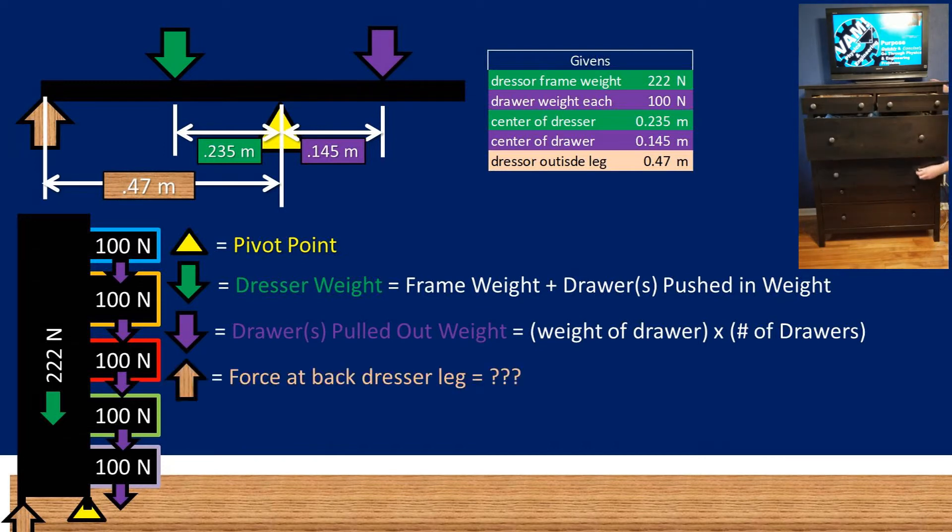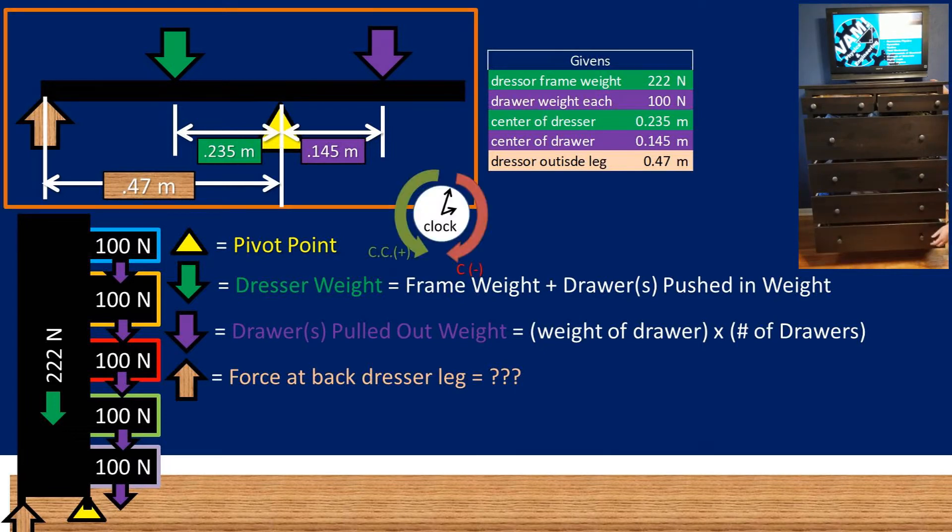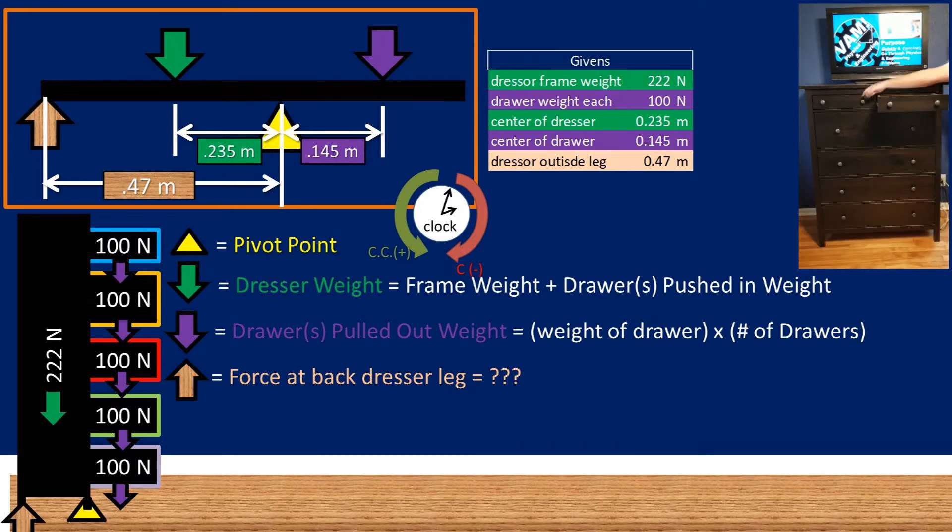Now we need to find the force that is the floor pushing back on the back legs of the dresser. You may have noticed at the top of the screen there is a diagram that is a lever. This represents this problem. So now recall that if a torque is going clockwise, it is negative, and if it is going counterclockwise, it is positive.